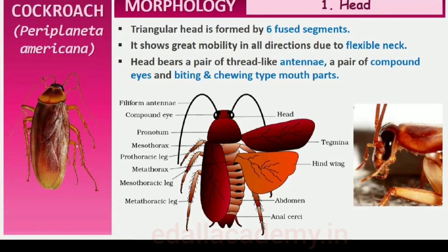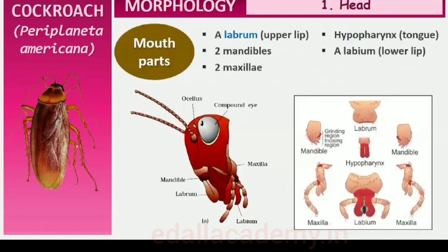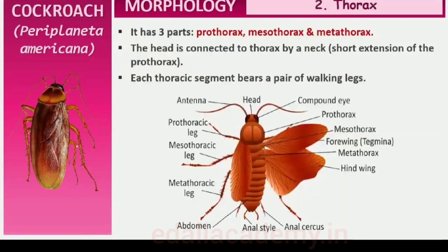The head is triangular in shape and lies anteriorly at right angles to the longitudinal body axis. It is formed by the fusion of six segments and shows great mobility in all directions due to a flexible neck. The head capsule bears a pair of compound eyes. A pair of thread-like antennae arise from membranous sockets lying in front of the eyes and have sensory receptors that help in monitoring the environment. The anterior end of the head bears appendages forming biting and chewing type mouth parts, consisting of a labrum (upper lip), a pair of mandibles, a pair of maxillae, and a labium (lower lip). A median flexible lobe acting as tongue, the hypopharynx, lies within the cavity enclosed by the mouth parts.